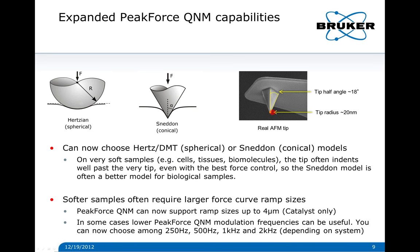The Sneddon model is useful in cases where you have soft samples where the tip actually indents well beyond the end of the tip, where at the very end the tip may be modeled by a sphere. But if you're pushing into a bacterium, you're likely to go much farther and have to consider the sidewalls of the tip. We've implemented this Sneddon model, and it's essentially what the bio AFM community is using primarily to look at cells, so we're following in the footsteps of the researchers here.